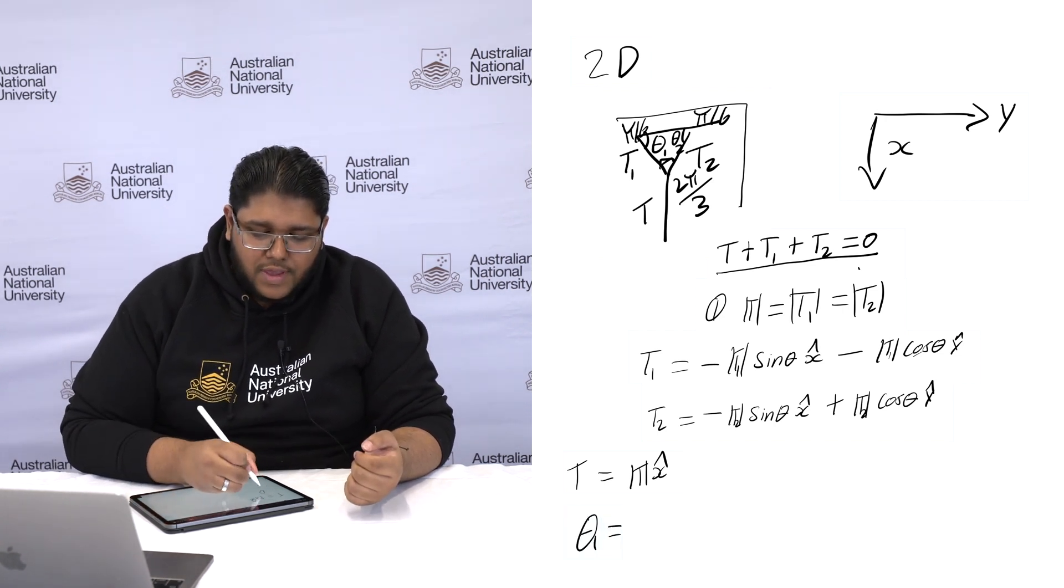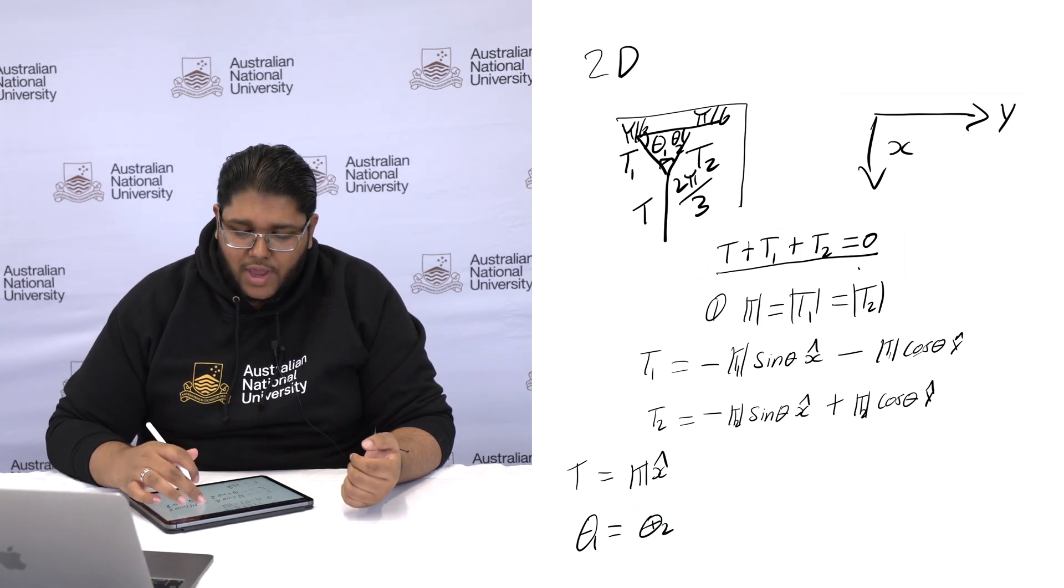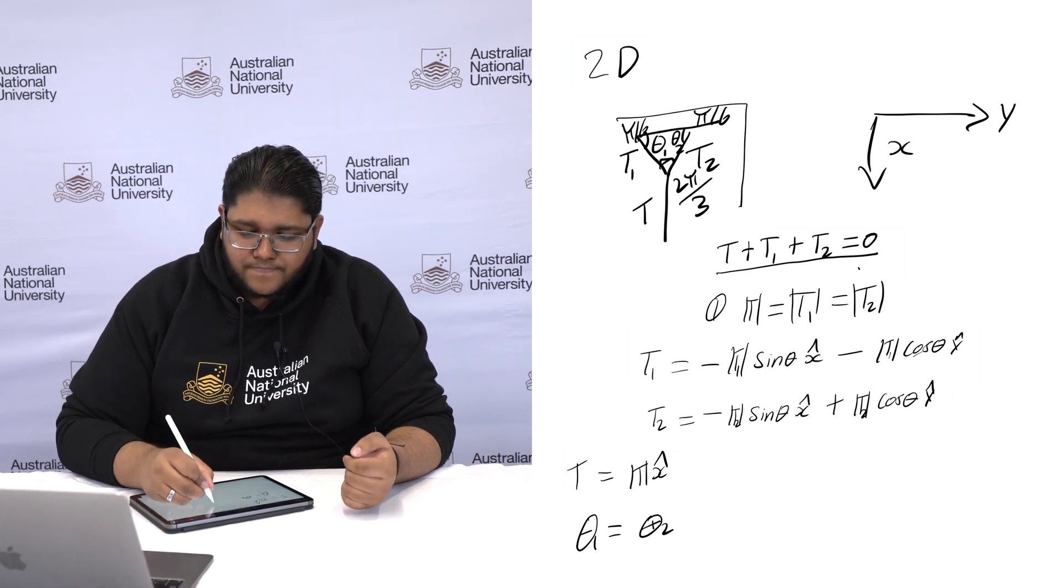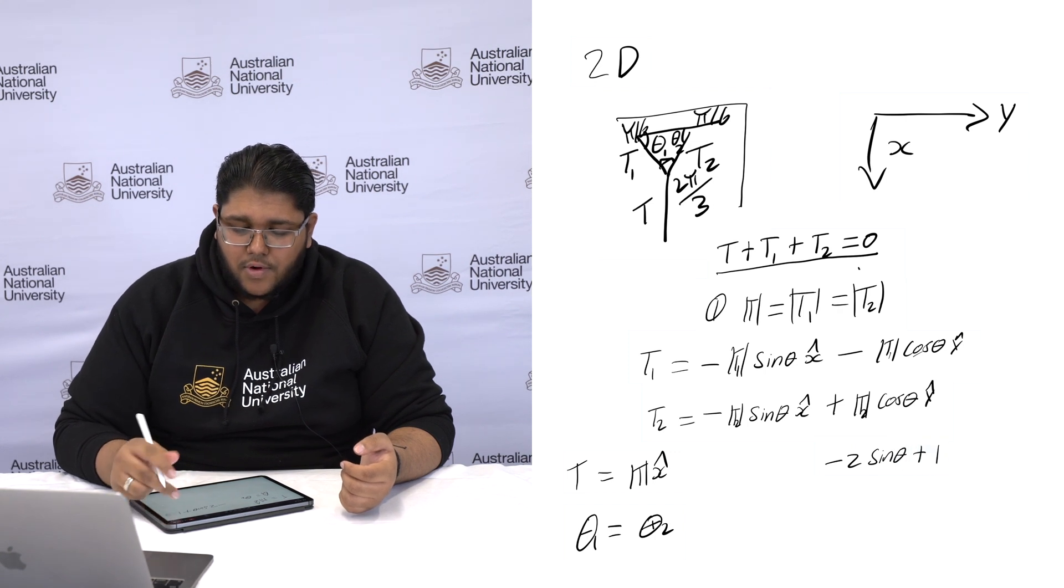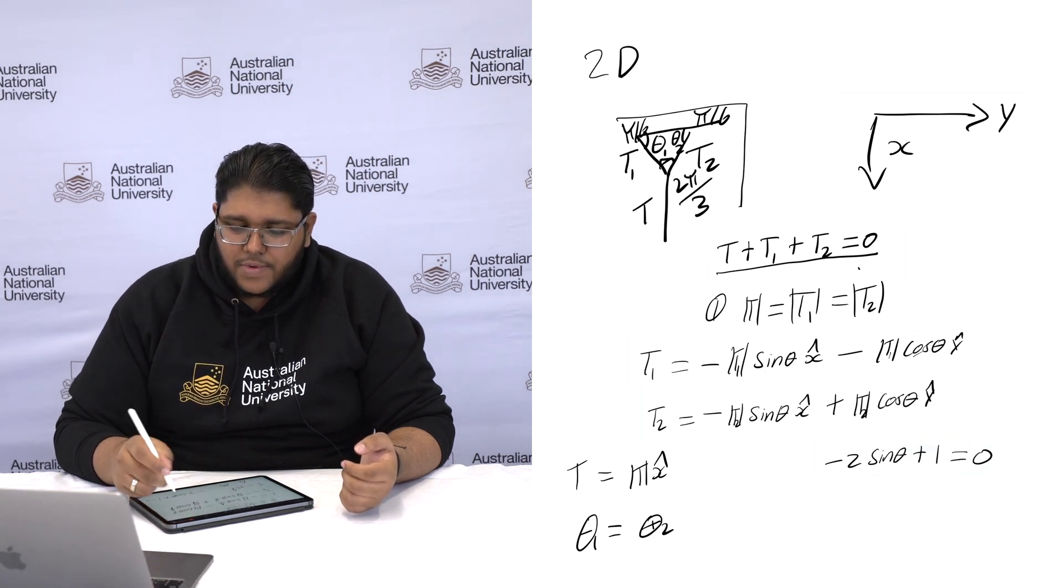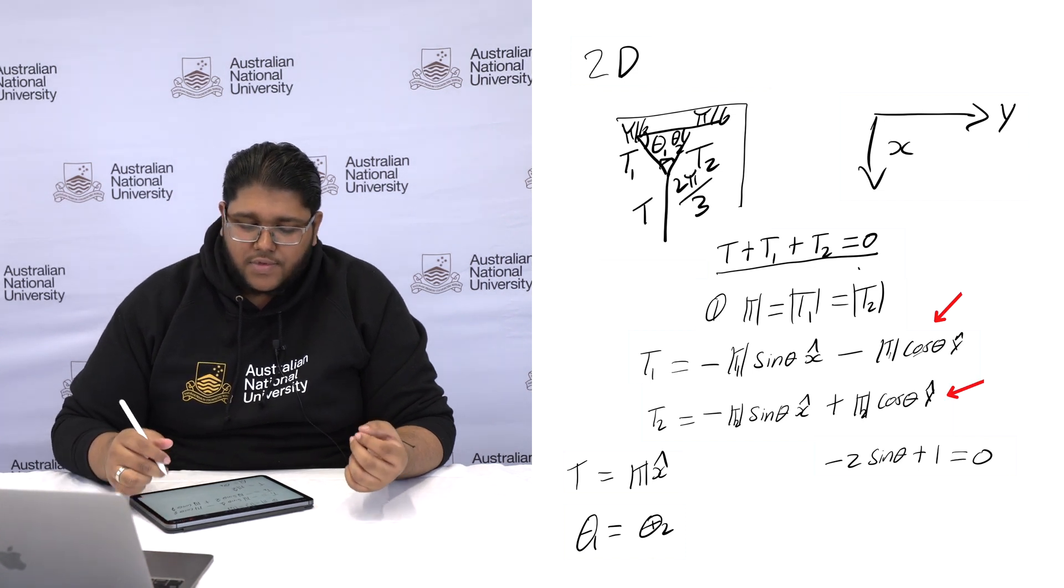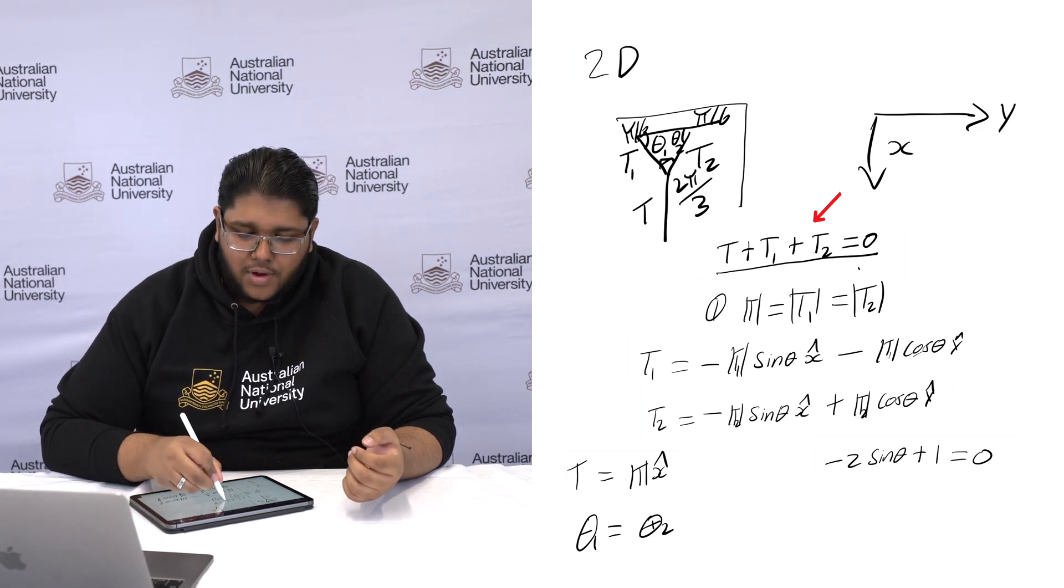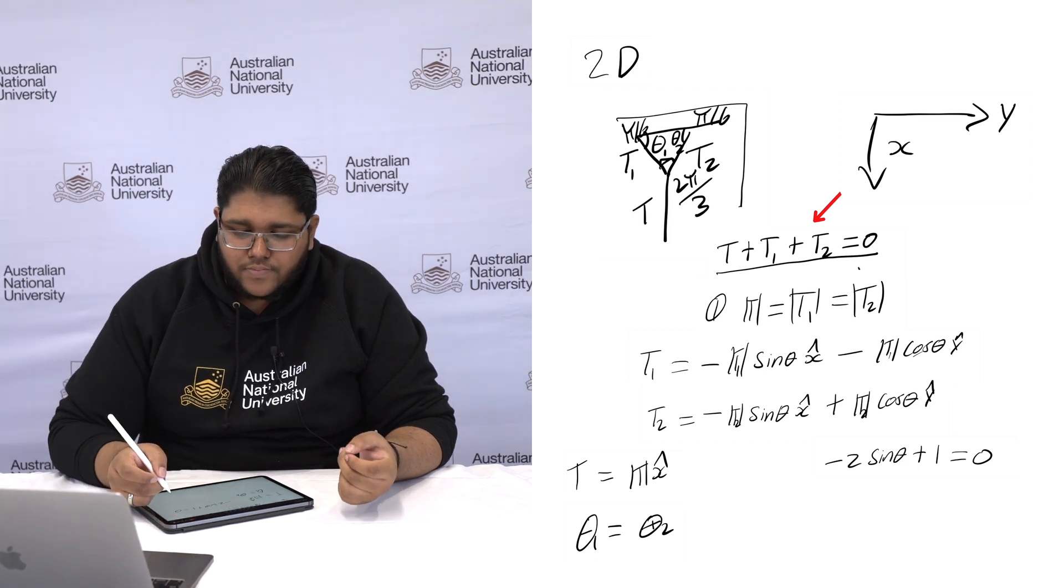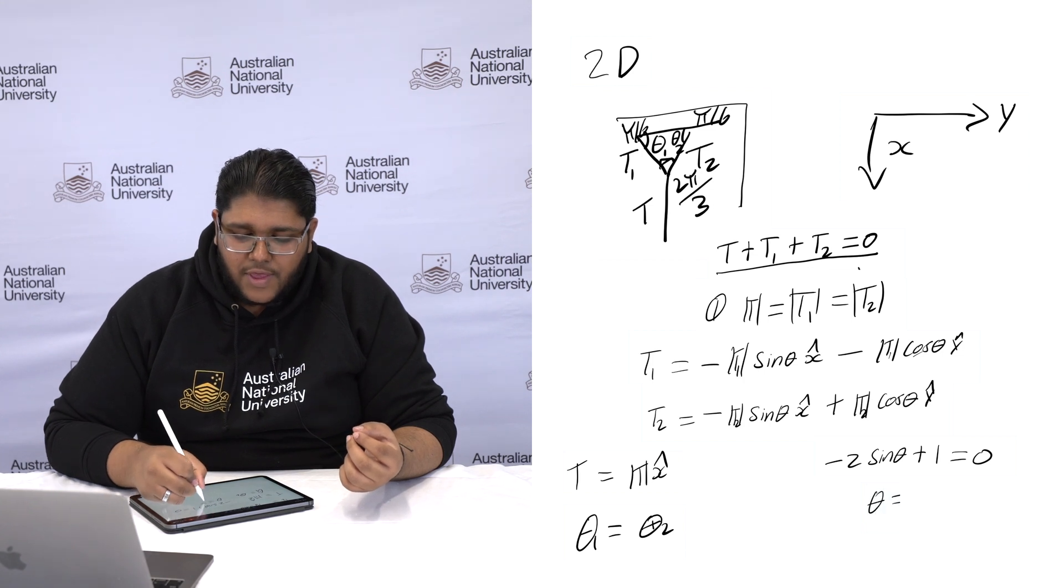From this we can try and figure out the angles. So first we can say that theta 1 equals theta 2. And when you add all these together, what you end up with is negative 2 sine theta plus 1 equals 0. This is because the cos thetas cancel out. When you add all these forces together, the cos theta 1 equals theta 2 equals 0. When we solve for theta, we are then left with theta equals pi on 6.